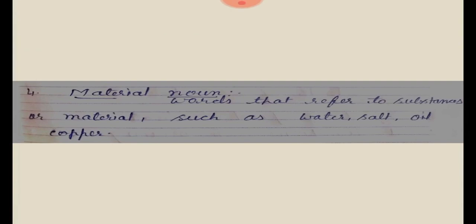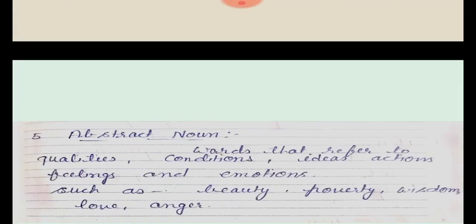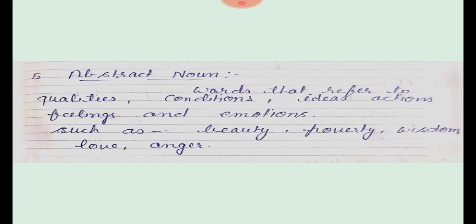Fourth, material noun — words that refer to a substance or material, such as water, salt, oil, copper, from which we can make other things. Fifth, abstract noun — words that refer to qualities, conditions, ideas, actions, feelings, and emotions. Examples of abstract nouns: beauty, poverty, wisdom, love, and anger.